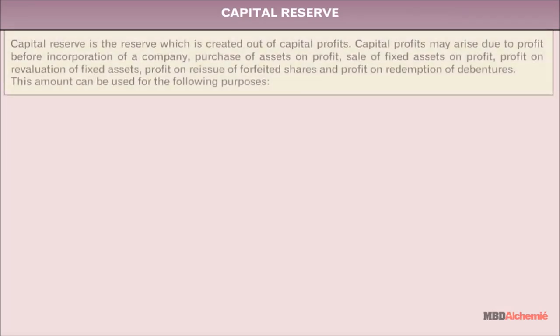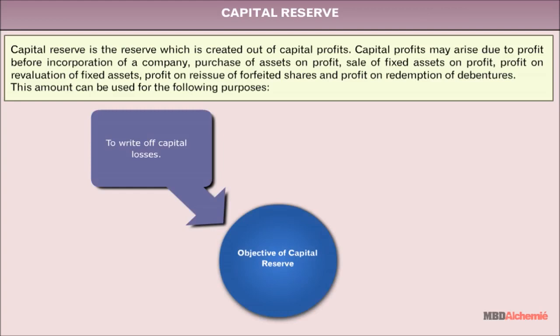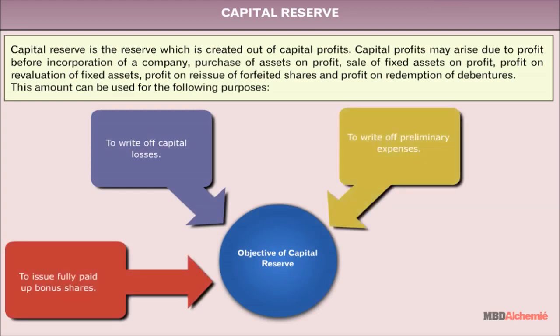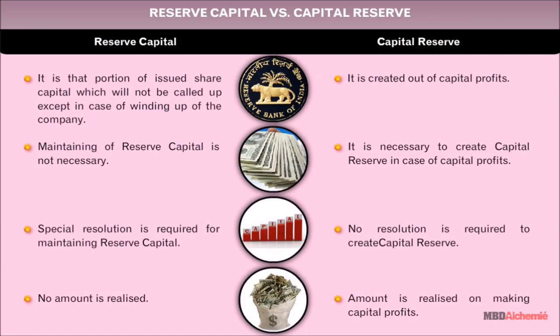Capital Reserve is a reserve created out of capital profits. Capital profits may arise due to profit before incorporation of a company, purchase of assets at a profit, sale of fixed assets at a profit, profit on revaluation of fixed assets, profit on reissue of forfeited shares, and profit on redemption of debentures. This amount can be used to write off capital losses, write off preliminary expenses, issue fully paid-up bonus shares, and buy back shares. The difference between Reserve Capital and Capital Reserve is also discussed.